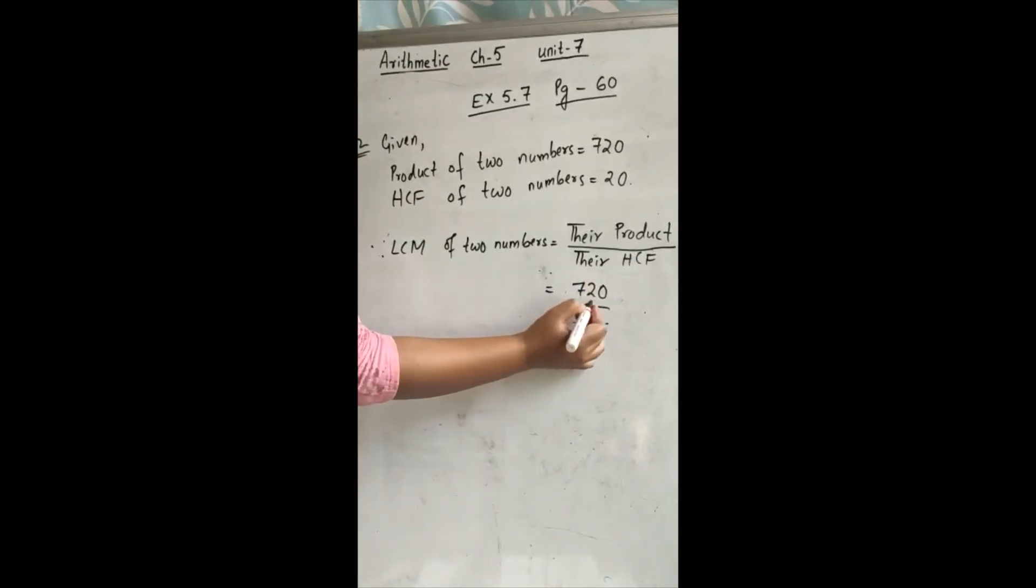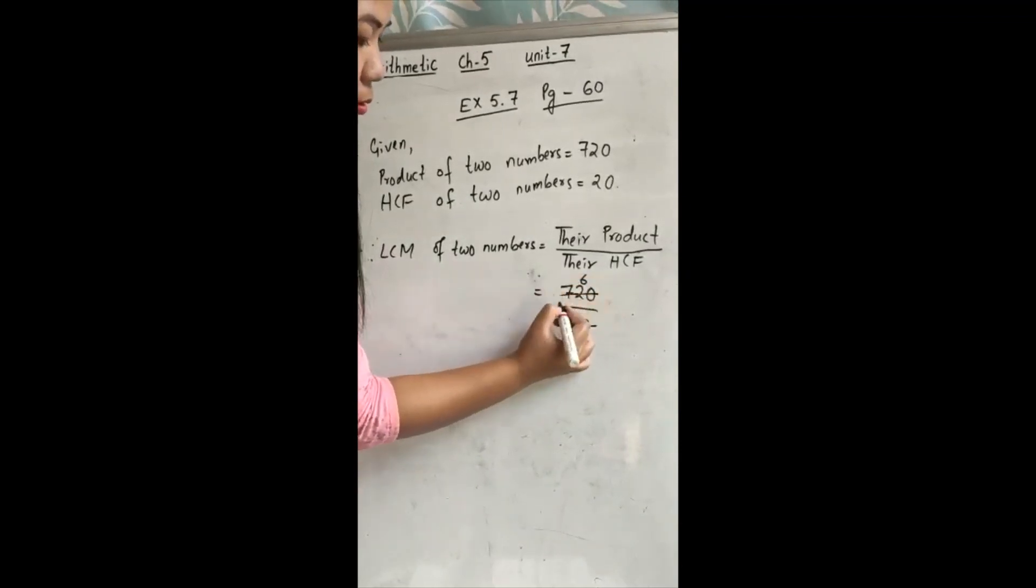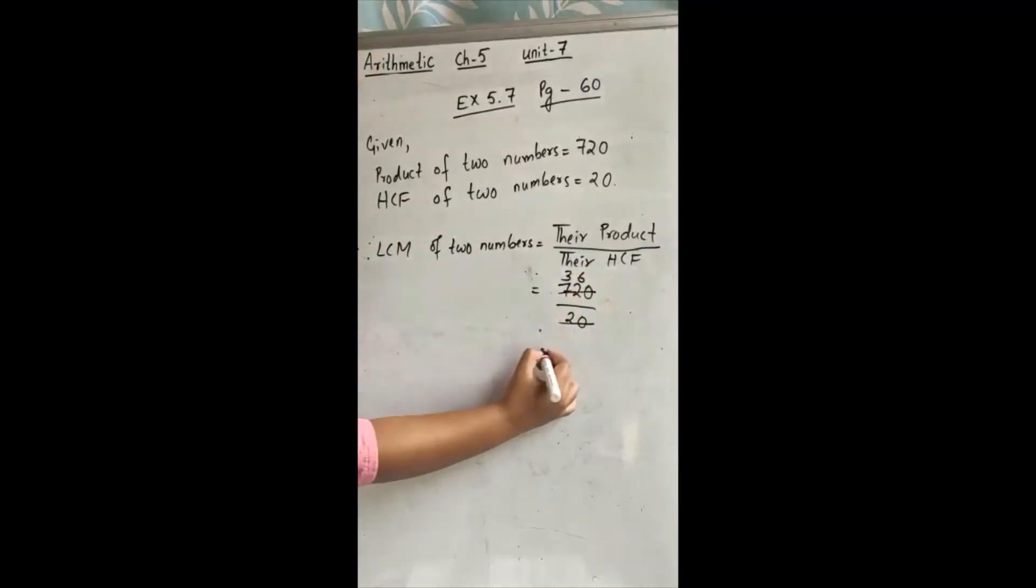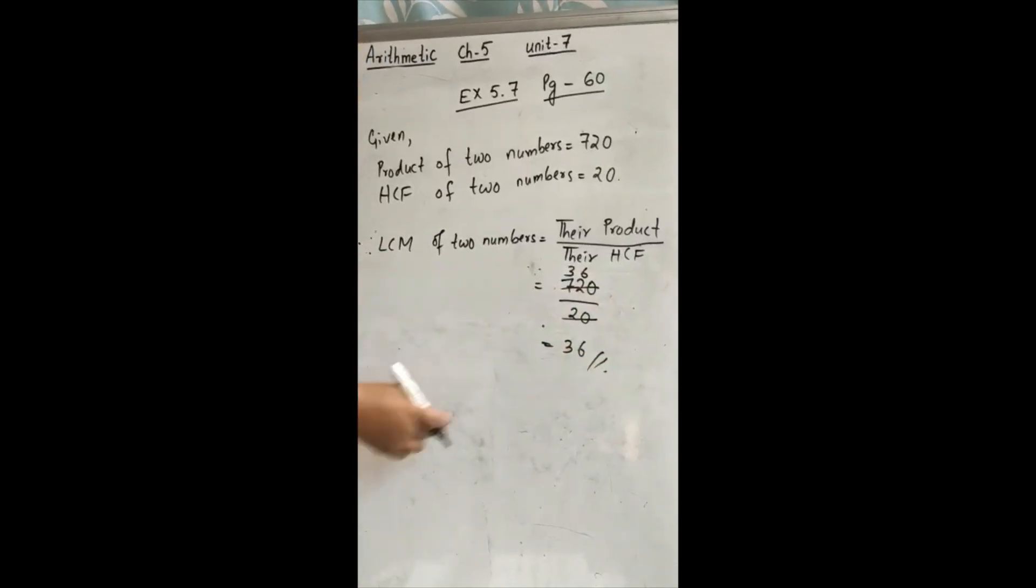Now we can cut with 20. 6, 3. So the LCM of two numbers is 36.